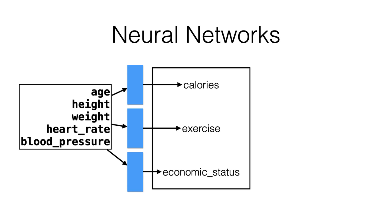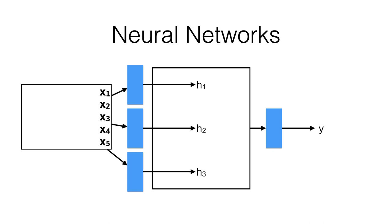All these things are numbers output from little neural networks, and then you can take these outputs and pass them into another neural network — another linear model. That last neural network might estimate someone's life expectancy based on their calories, exercise, and economic status as output by the previous neural networks. The principle is that these are all just numbers, so the output can become the input to another layer.